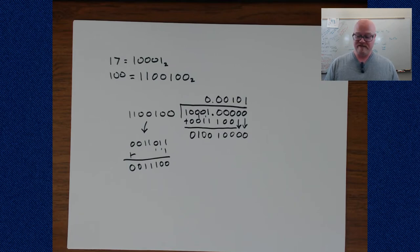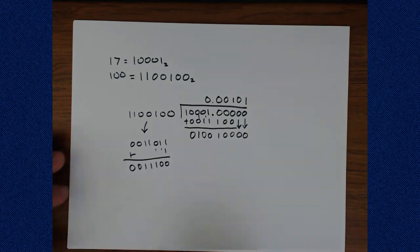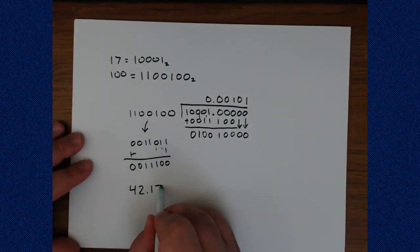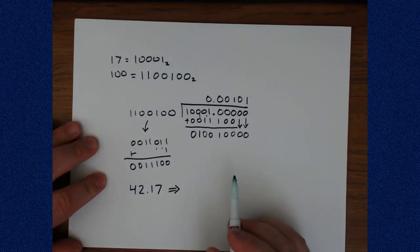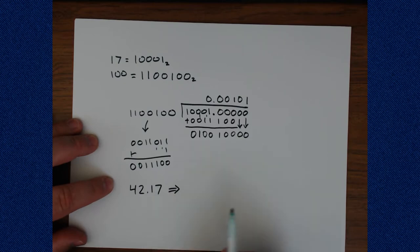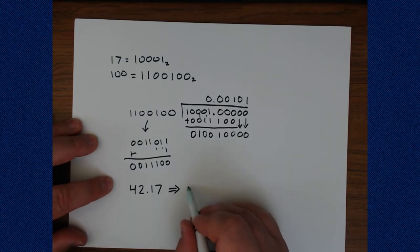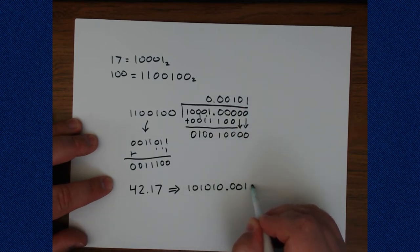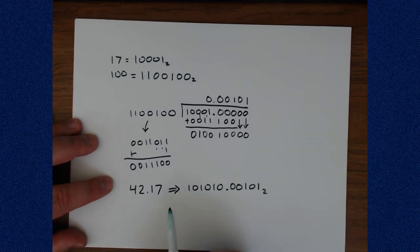So from this we find our answer. It turns out that 42.17 when converted to binary with 5 bits of precision — and notice that's not an equal sign — is the bit pattern for 42, which is 101010, point 0, 0, 1, 0, 1 binary.